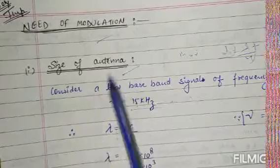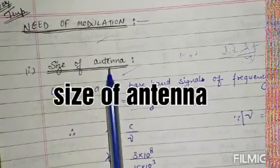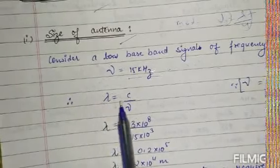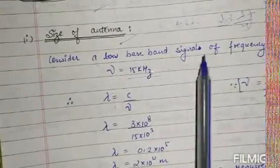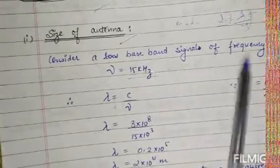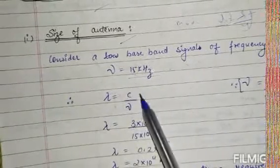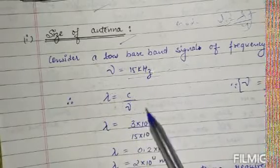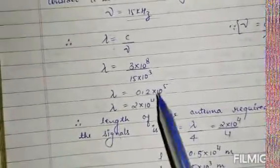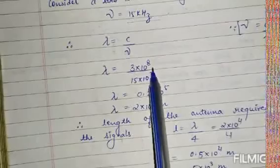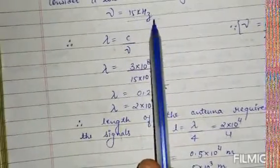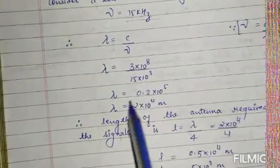So here my topic is need of modulation. First of all, we will study the size of antenna — how much size of antenna we should use for any signal transmission. Consider a baseband signal of frequency 15 kilohertz. We know that lambda is equal to c by nu, where lambda is the wavelength, c is the speed of light, and nu is the frequency. So we put in values: c = 3×10⁸ m/s and nu = 15 kHz = 15×10³ Hz.